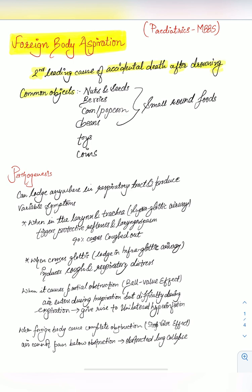The common objects that are aspirated or cause obstruction in the respiratory tract are nuts and seeds, berries, corn and popcorn, beans that are small round foods, and also toys and coins.